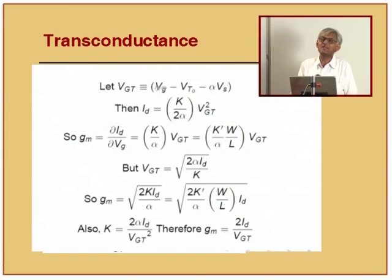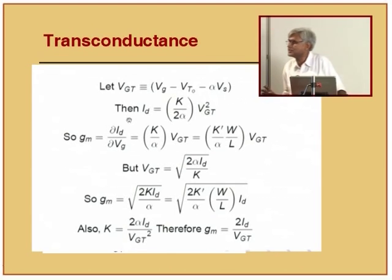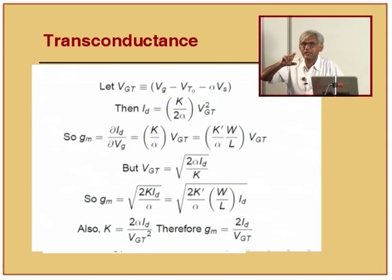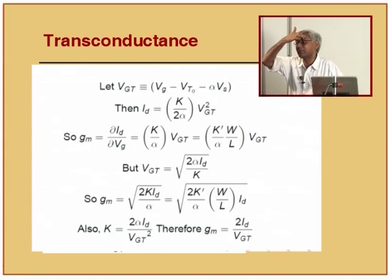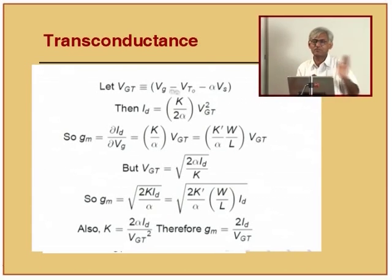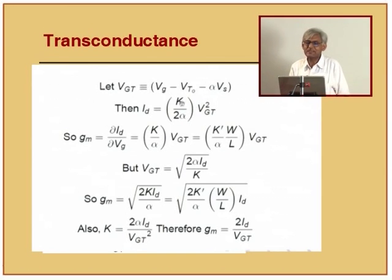I define VG - Vt as VGT, with alpha equal to 1, so VGT equals VGS - Vt. VGT is the amount by which the gate voltage is above the conduction threshold. With this definition, the equation becomes very simple: ID equals (k/2) * VGT squared. Notice that VGT is linear in VG; other things are constants.